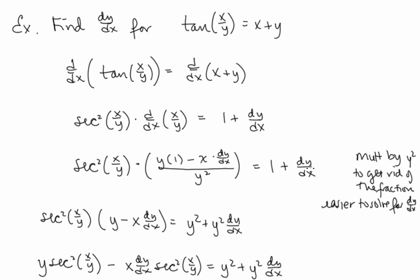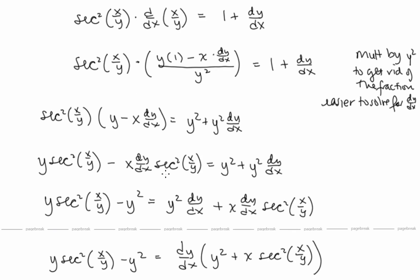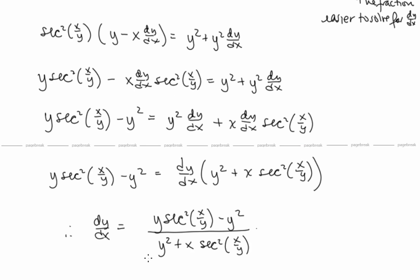Our goal is to solve for dy/dx. First, since we have a fraction, we multiply everything by y² to eliminate it. Then we distribute sec²(x/y) to both terms, move the dy/dx term to the other side, subtract the y² term, factor out dy/dx, and divide by the remaining factor. That gives us our final expression for dy/dx.